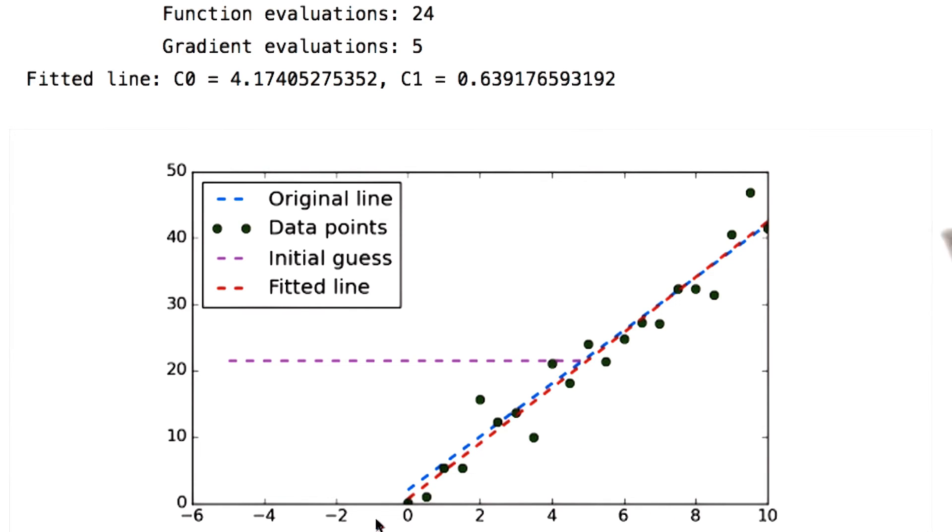And the metric you're trying to minimize is error. So we passed it an initial guess here of this purple line and this data. So that's all it knows right now is this initial guess of a purple line and this data.